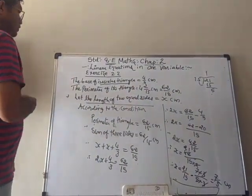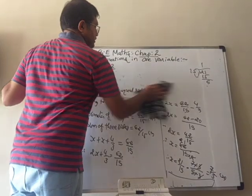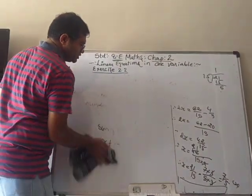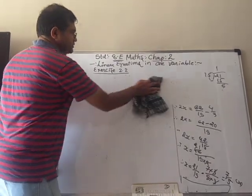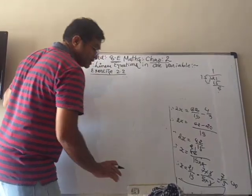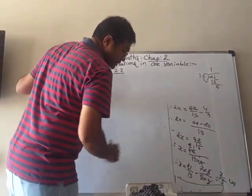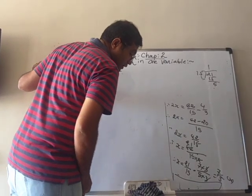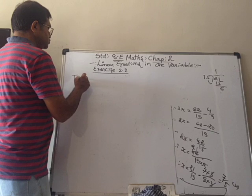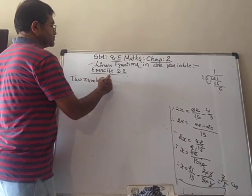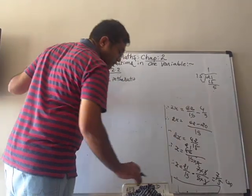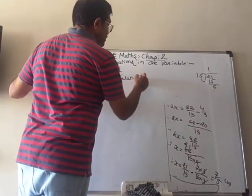Now we can go to another question. Other questions you have to do yourself — any difficulties, write in the comment section. Now we take another question involving ratio. Two numbers are in the ratio 5:3.